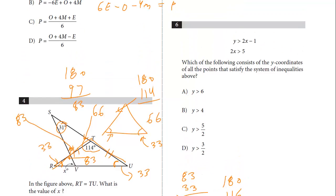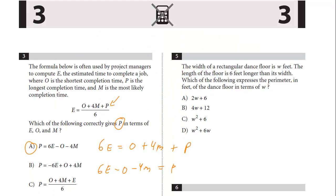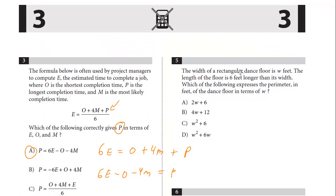Let's move back up to question number 5. The width of the rectangular dance floor is W feet. The length of the floor is six feet longer than the width. Which of the following expresses the perimeter in feet of the dance floor in terms of W? So let's start. We have a rectangle.